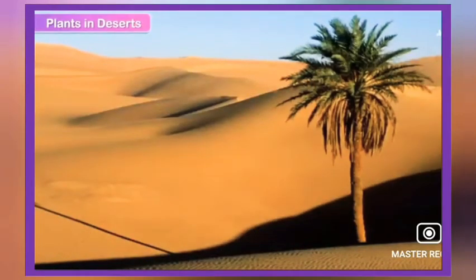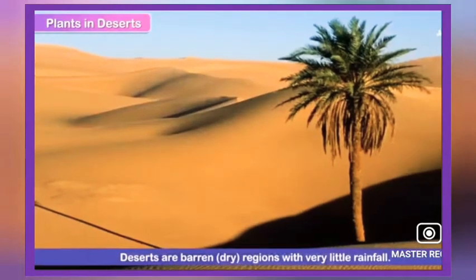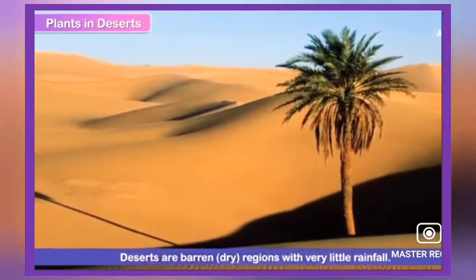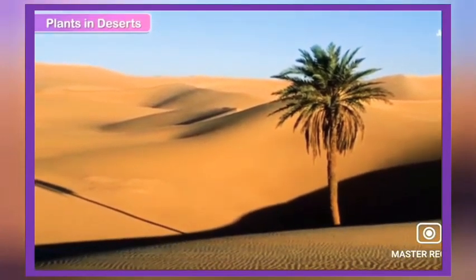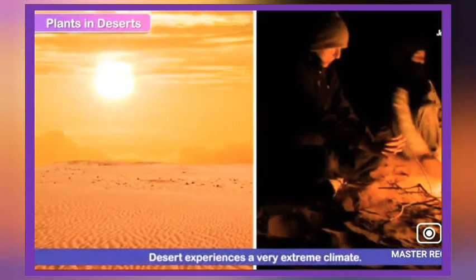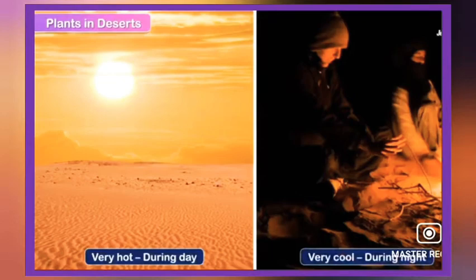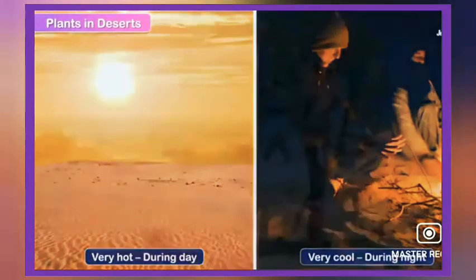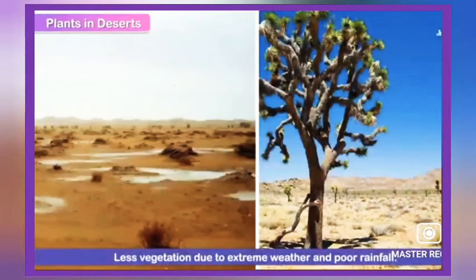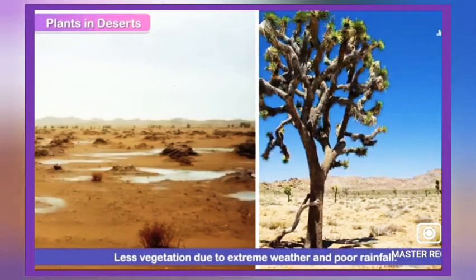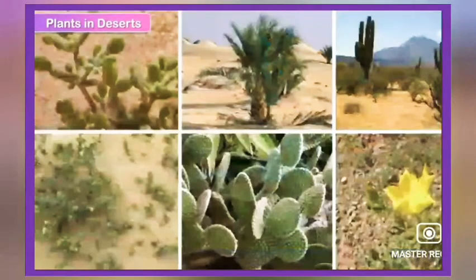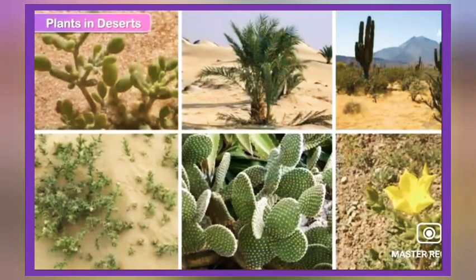Plants in deserts: deserts are barren, dry regions with very little rainfall. They experience a very extreme climate — very hot during the day and very cool at night. Because of the extreme weather and poor rainfall, there is not much vegetation. Very few plants grow in deserts. These plants adapt themselves to the desert climate.